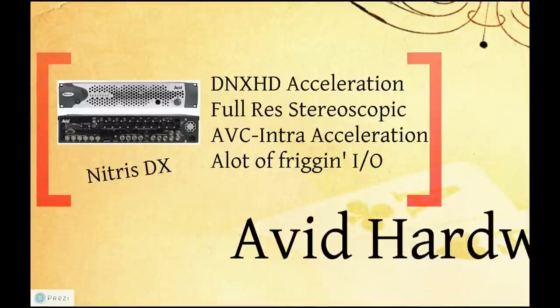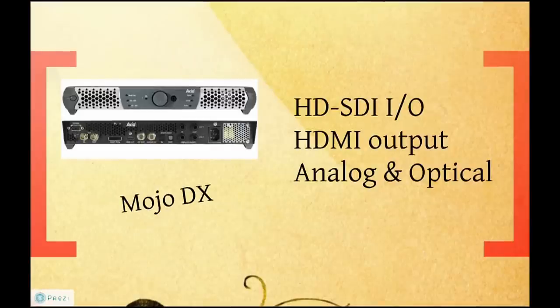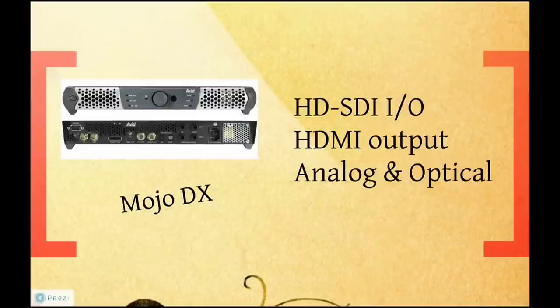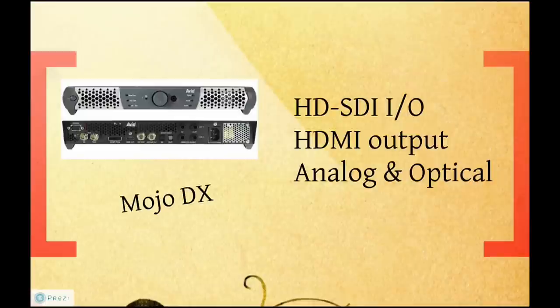We also have the Mojo DX, the little brother to the Nitrous DX. The Mojo DX is good for facilities routing everything through SDI, allowing for SDI in and out plus HDMI out and analog and optical audio. However, I don't see a lot of these being sold or used, because there is no hardware acceleration on the box. With third-party I/O now available, the only advantage of the Mojo DX is support for things like LTC and ancillary data that third-party cards don't yet support. I really don't see how long it will be in this world, given all the third-party options.